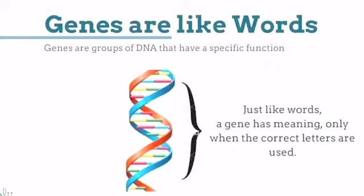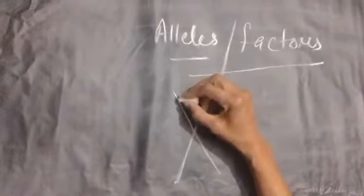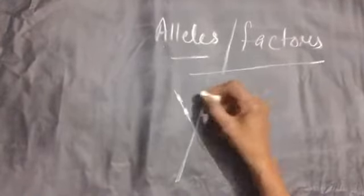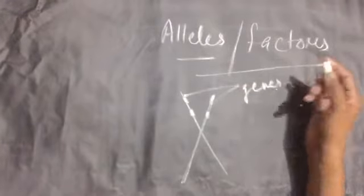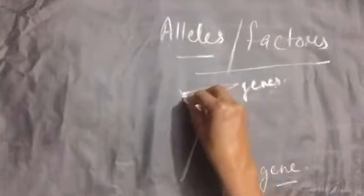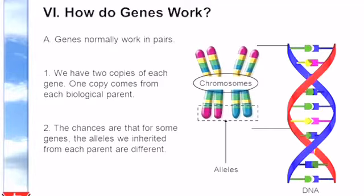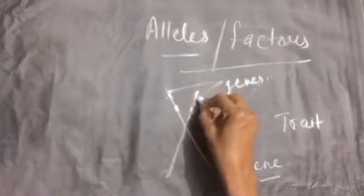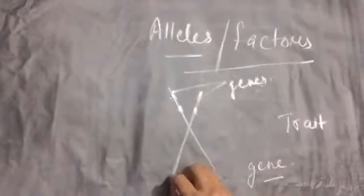We have already seen that chromosomes work in pairs — a paternal chromosome and a maternal chromosome. These functional segments are known as genes or factors. A gene has two versions: one is the paternal version and the other is the maternal version. We have already seen this in the DNA replication topic. For a trait or a character, a pair of alleles is needed. That is, one gene has two versions or two alleles — one present in the paternal strand of DNA and the other in the maternal strand.